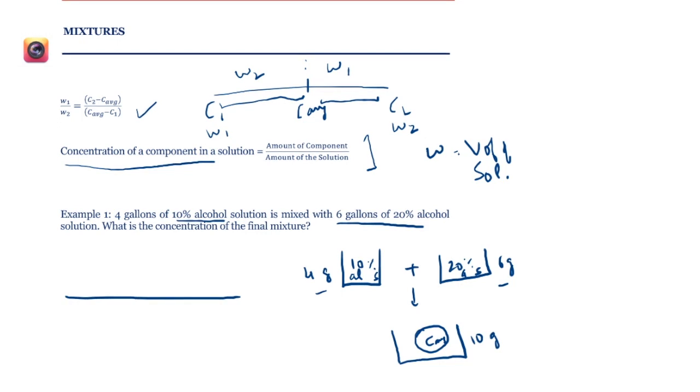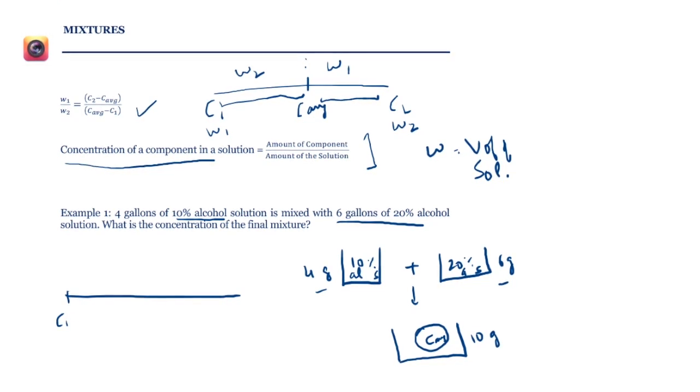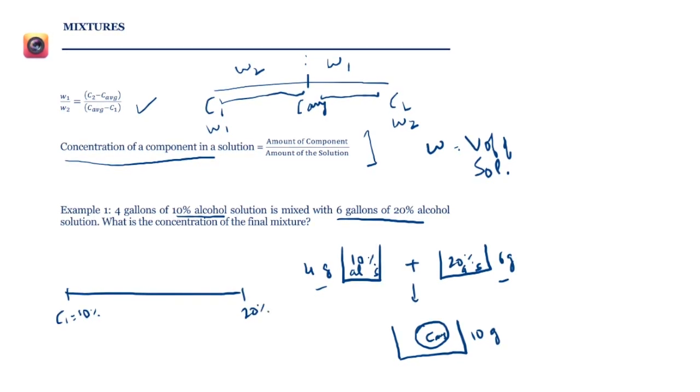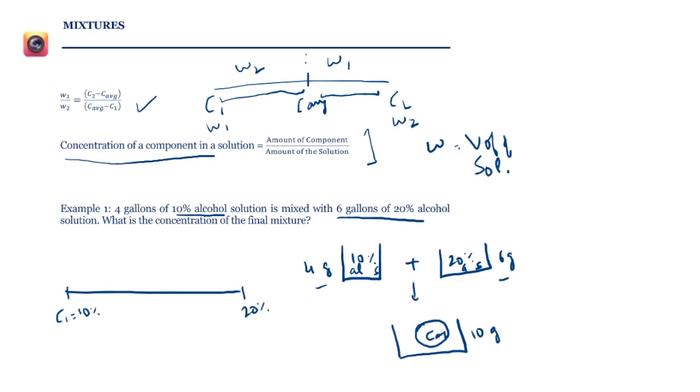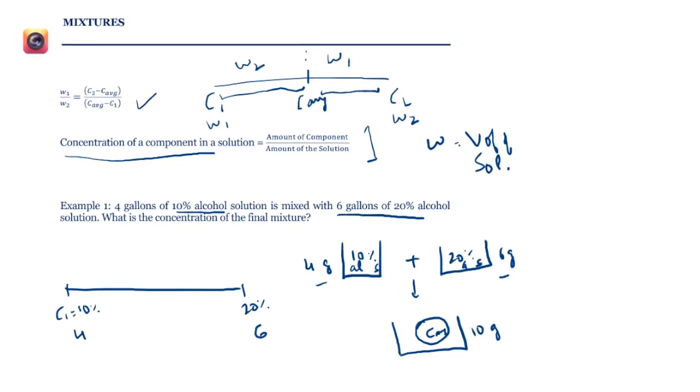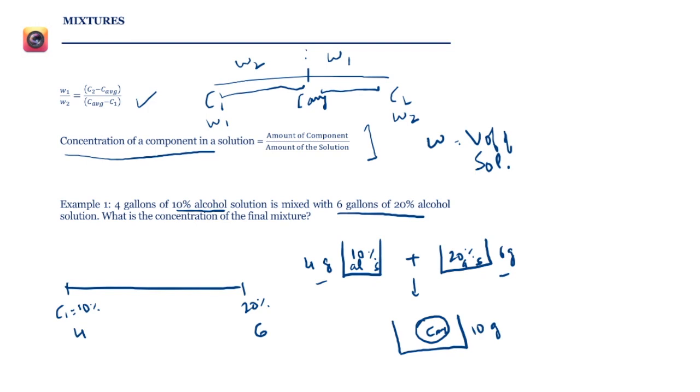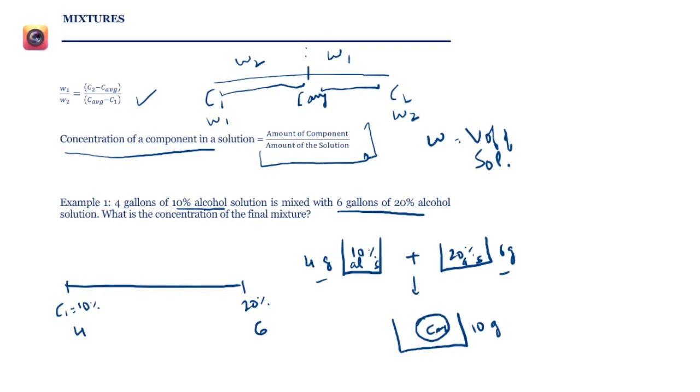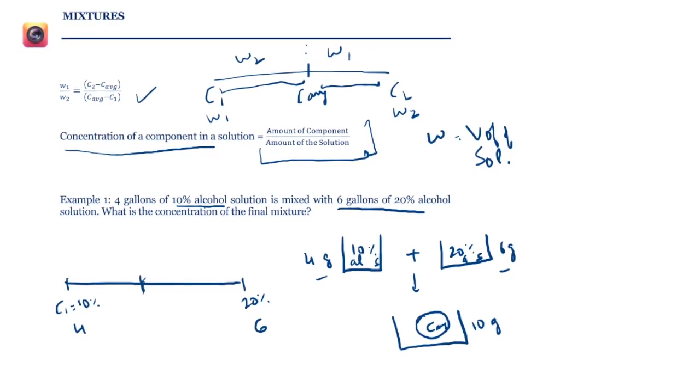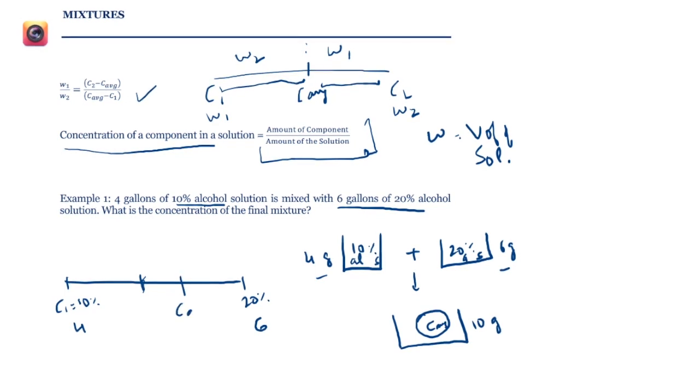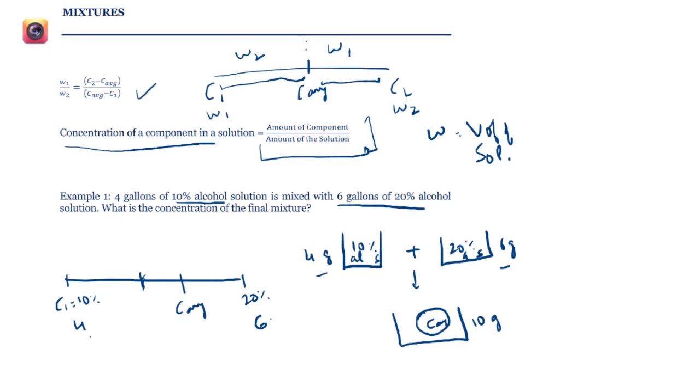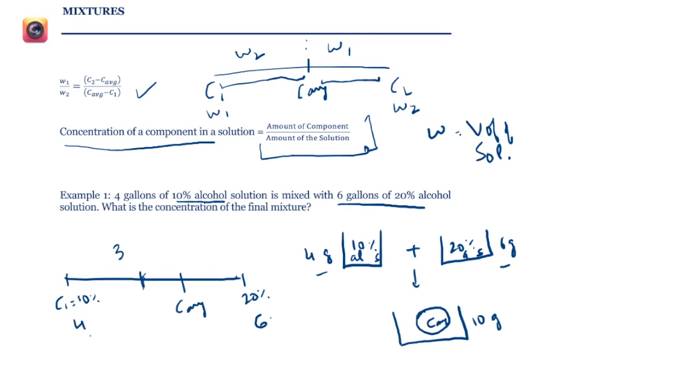Let's draw a scale over here. I say C1 is equal to 10% and I say C2 is equal to 20%. How much is W1? That is 4 gallons. The W2 is 6 gallons because this is the amount of the solutions that are mixed. And our weight is going to be the amount of the solution. So then my C average will be somewhere over here. And why is that? Because the ratio of the weights is 2 is to 3. So the distance between C1 and C2 will be split in the ratio what? 3 is to 2.